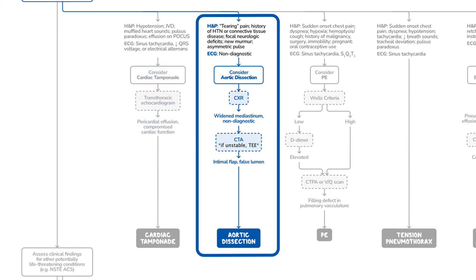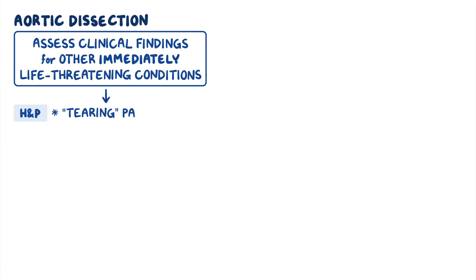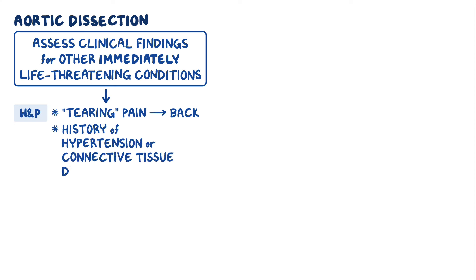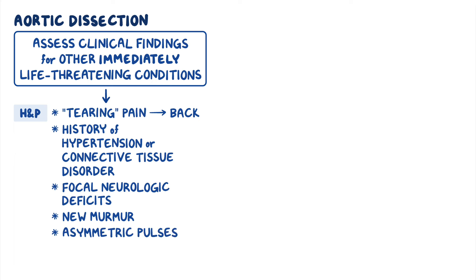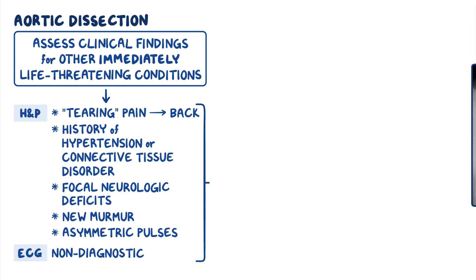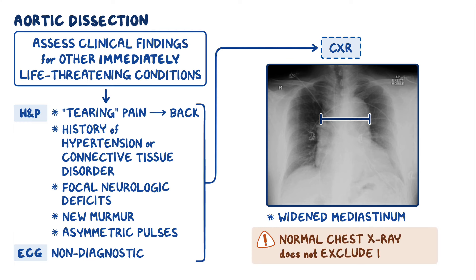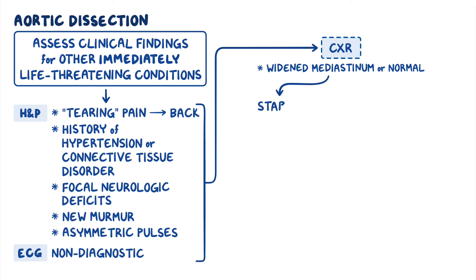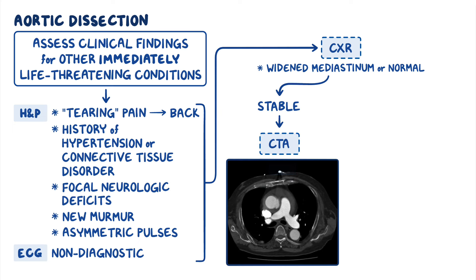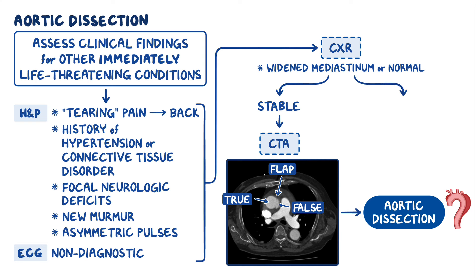Next up is aortic dissection. These patients often present with tearing pain that radiates to the back. Their past medical history can be significant for conditions like hypertension or connective tissue disorder. The patient may have focal neurologic deficits, a new murmur, or asymmetric pulses on physical examination. The ECG is typically non-diagnostic. If you order a chest x-ray, you may see suggestive findings like a widened mediastinum, but a normal chest x-ray does not exclude the diagnosis. If you suspect aortic dissection and the patient is stable, the next step is an immediate CT angiogram of the chest, which will show an intimal dissection flap and a true and false lumen. If the patient is unstable, the best initial test would be a transesophageal echocardiogram, or TEE.